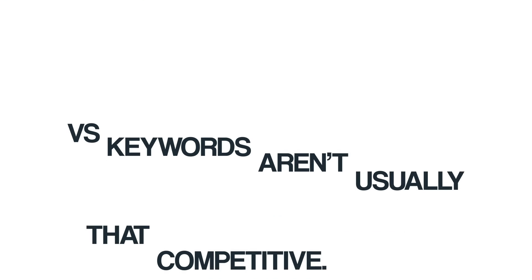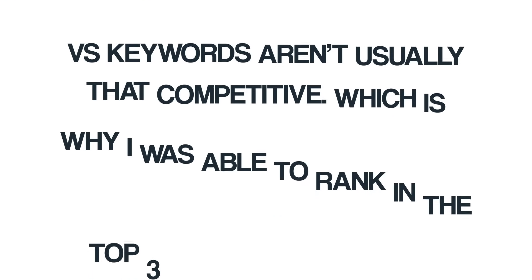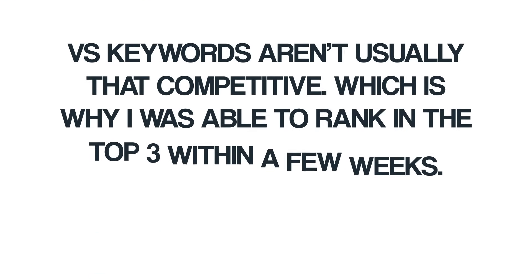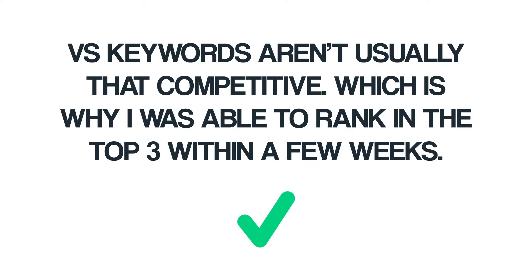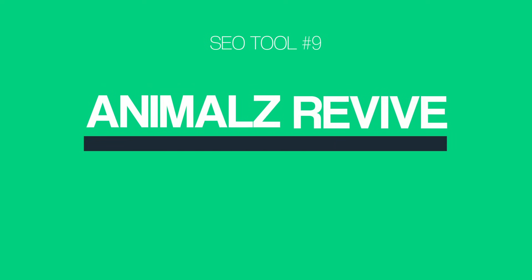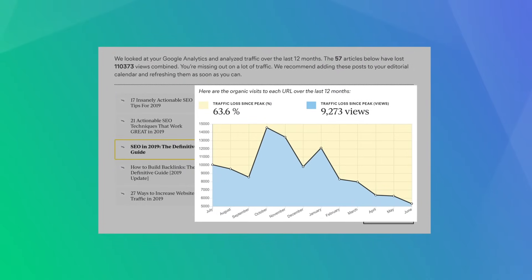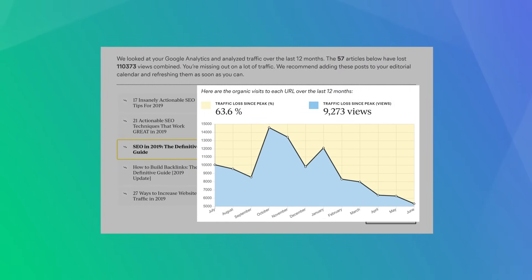Now it's time for our last tool, SEO tool number nine: Animalz Revive. Animalz Revive helps you find older content on your site that needs an update, an upgrade, or both. Before this tool came along, you had to manually find these pages in Google Analytics, and it was a huge pain. But with this tool, you get a list of pages that need some TLC, and it even shows you how many visitors you're losing by not updating your old content.